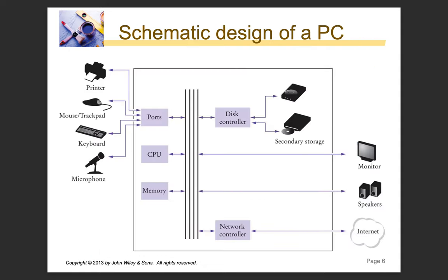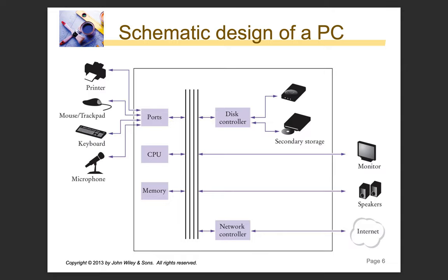This is a schematic design of a computer or PC. On the left-hand side we've got some input and output devices — monitors, speakers, and the internet. The arrows indicate the direction of flow of information. If you click your mouse, that provides information into the ports, which is carried along buses — basically the wires that connect everything together. The CPU accesses this information and performs processing, and some stuff is stored in memory. You've got your input and output devices on the outside and the internal computer in the middle.